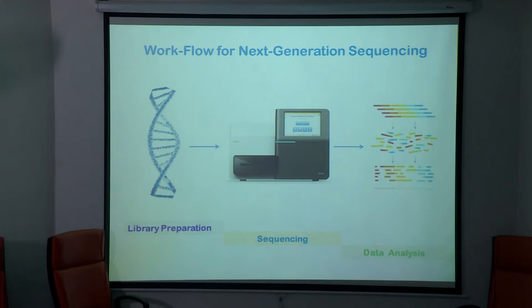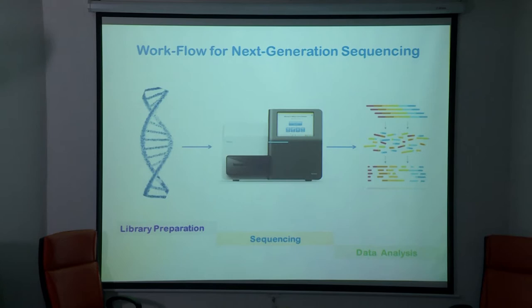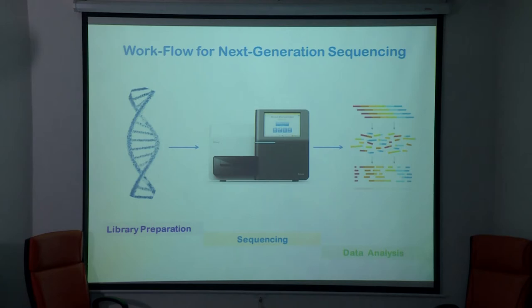If you see the workflow for next-generation sequencing, there are three main steps under NGS. First is library preparation. Once you have a sample, the first thing you have to do is prepare a library. Once you prepare a library, next is instrument-based sequencing. Once you sequence, you will get thousands and thousands of reads. Then you need different software or high-computing servers to analyze that data. These are the three main steps when you talk of NGS.